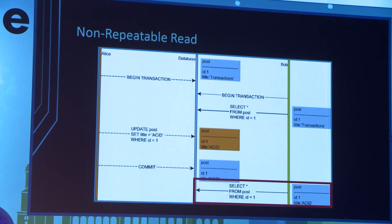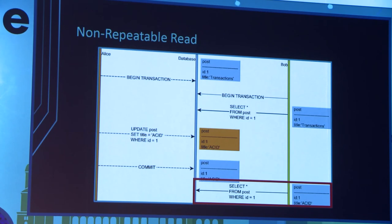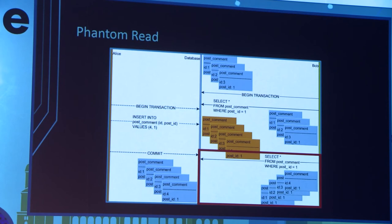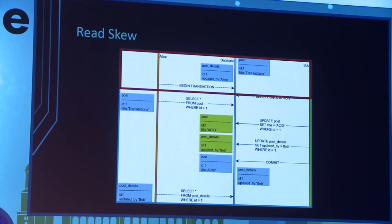Non-repeatable read: you read a record, someone modifies it, you read it again and it has changed. Whatever decision you took in between the first and second read may be based on something that has since changed — which is exactly like reading the balance and then doing the write when it has changed. Phantom read is the same but applies to ranges — like the employee salary example: you read three records, someone adds another one, and your subsequent read is no longer consistent. That's where the standard stops.